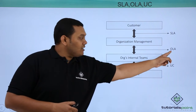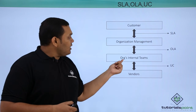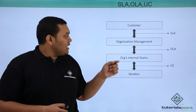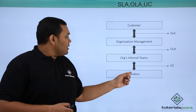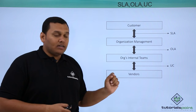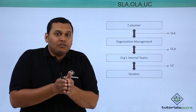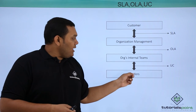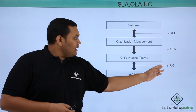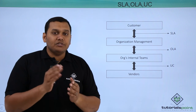The operational level agreement comes between the organization management and the organization's internal teams. The underpinning contract comes between the internal teams of the organization and the vendors. When any assistance is required from vendors, we log a call with them, and the underpinning contract signed between both parties should have information about the time frames within which the service can come back online.